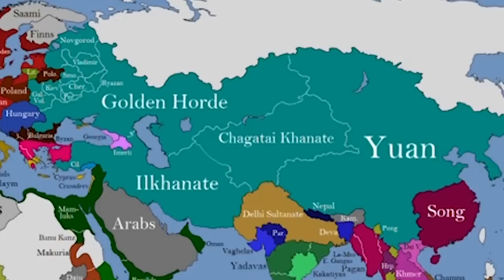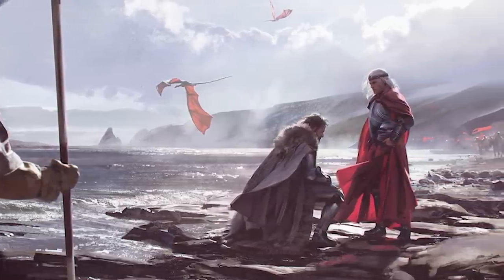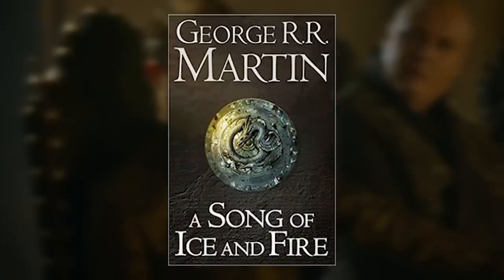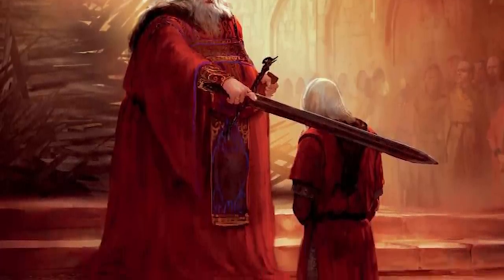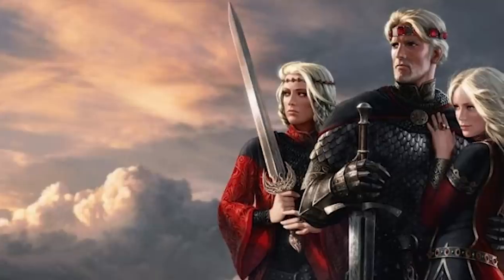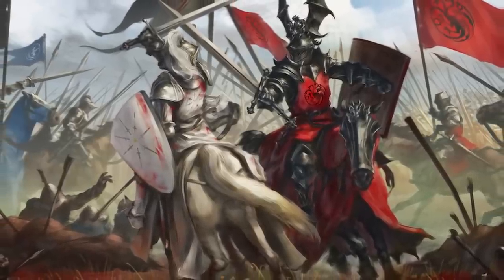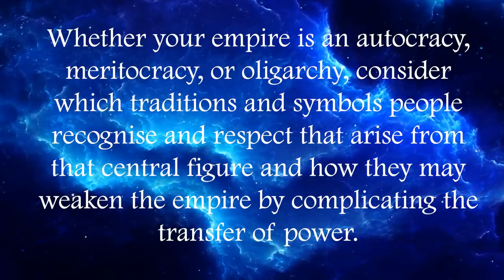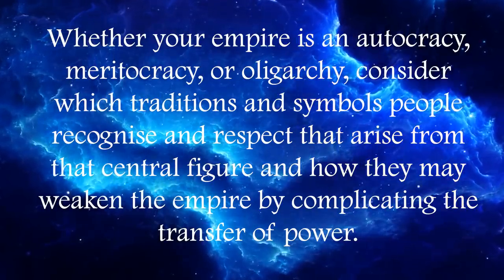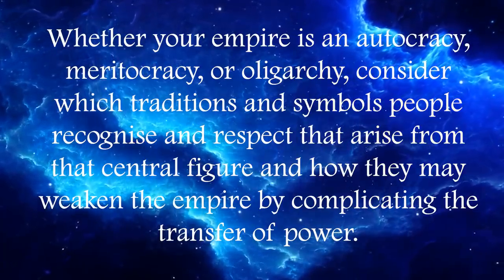From that point, the empire would progressively lose more territory. It's important to think about how your empire actually legitimizes its rulers. In George R.R. Martin's A Song of Ice and Fire, the Blackfyre Rebellion began when the king legitimized his bastard son and gave him the sword traditionally given to the heir — the sword of Aegon the Conqueror, that central figure. This temporarily fractured the kingdom and led to numerous rebellions throughout history against the trueborn heirs. Whether your empire is an oligarchy, a meritocracy, or an autocracy, consider which traditions and symbols people recognize and respect that may arise from that central figure's life.